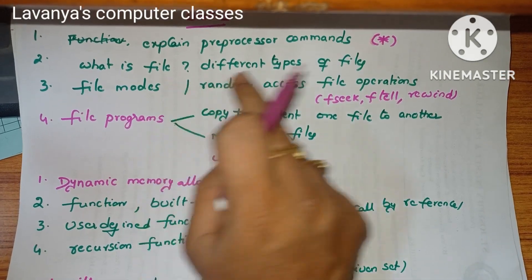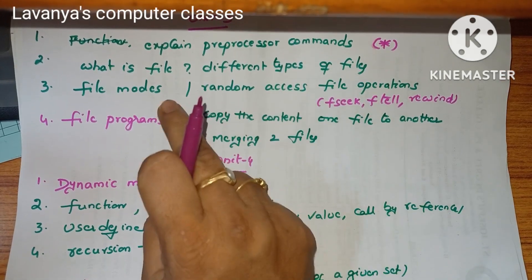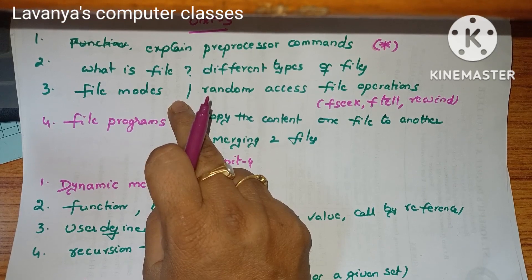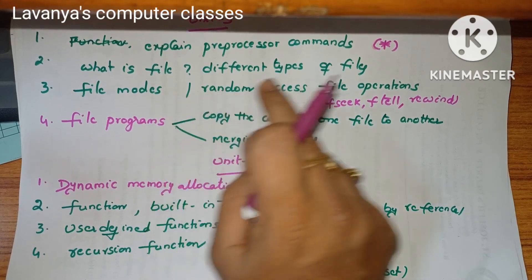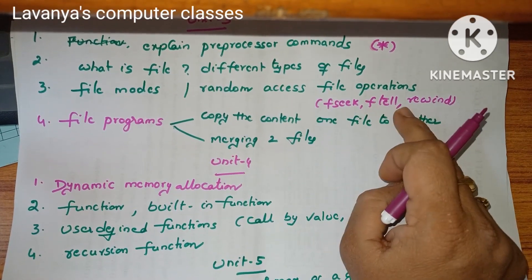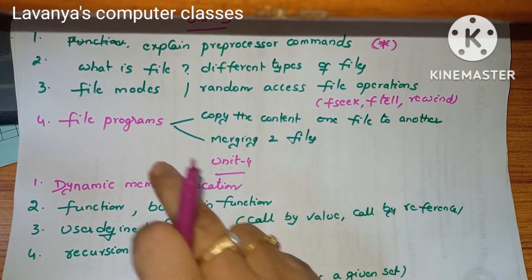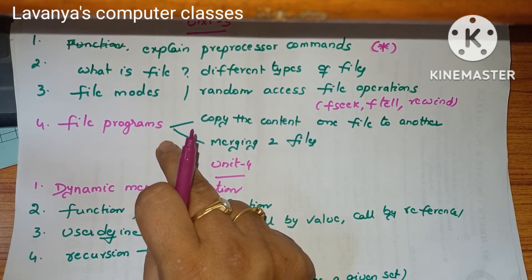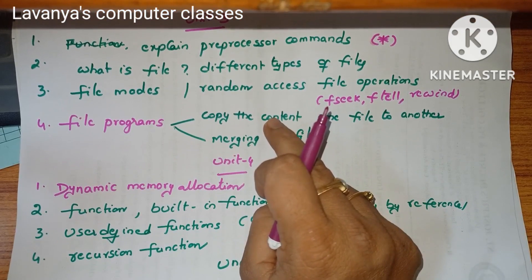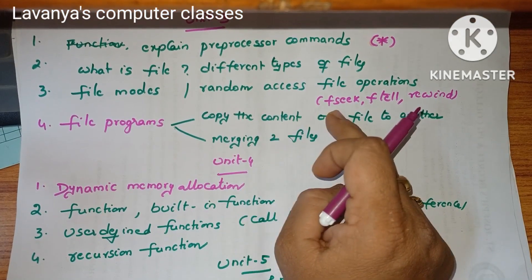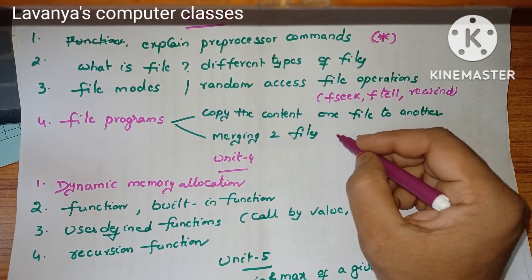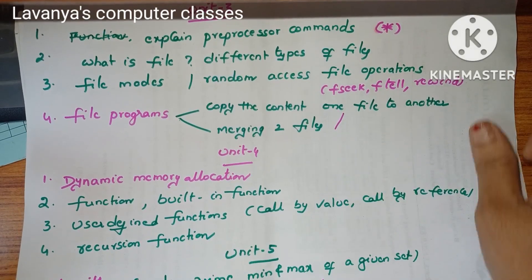Then: what is a file? Different types of files. Explain what is file mode — append mode, read mode, write mode — and random access file operations: fseek, ftell, and rewind. For file programs, very very important programs are: copy the content of one file into another file, and merging of two files. At least one question from this section is compulsory.